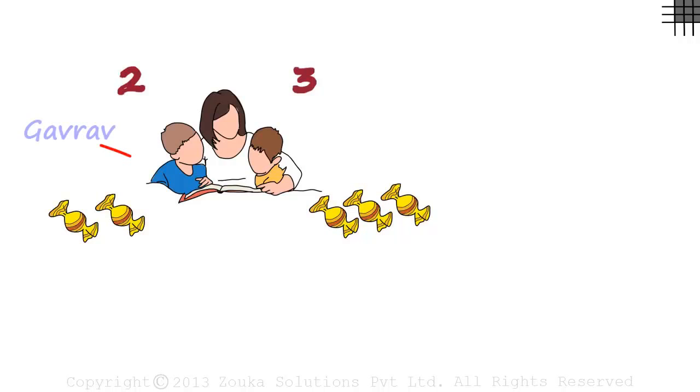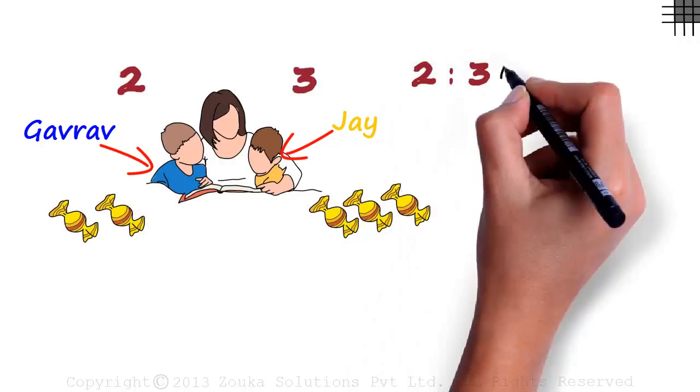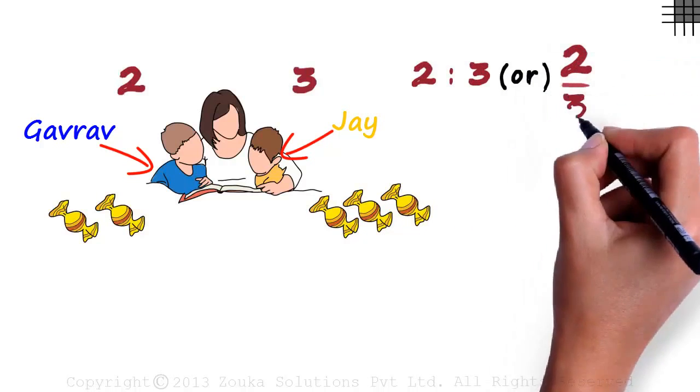So the ratio of the number of chocolates Gaurav got to the number of chocolates Jai got is written as 2 colon 3 or 2 divided by 3. This can be read as 2 is to 3. We are basically comparing the number of chocolates Gaurav got to the number of chocolates Jai got.